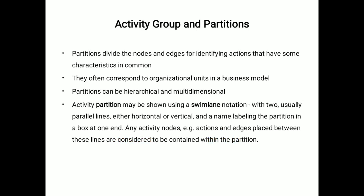Next is activity group and partitions. Partitions divide the nodes and edges for identifying actions that have some characteristics in common. They often correspond to organizational units in a business model. Partitions can be hierarchical and multi-dimensional. Activity partition may be shown using a swim lane notation with two usually parallel lines, either horizontal or vertical, and a name labeling the partition in a box at one end. Any activity node, actions, and edges placed between these lines are considered to be contained within the partition.